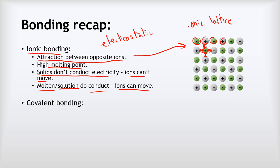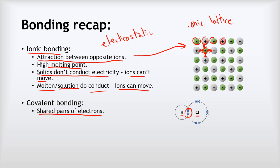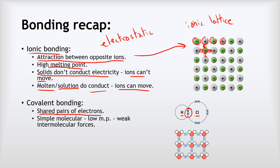Our other kind of bonding we've met before is covalent bonding. Covalent bonding involves shared pairs of electrons. Here we can see with hydrogen and chlorine their outer shells are overlapping, and in that overlap there is a dot and cross to represent a shared electron pair — that is our covalent bond. Some covalent structures are simple molecular, for example water, made up of individual molecules of three atoms. These have low melting points because they're held together by just weak intermolecular forces, which are really easy to break.